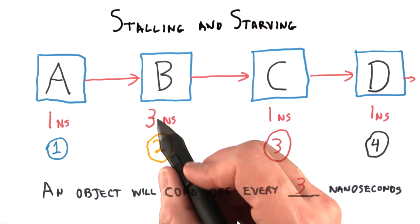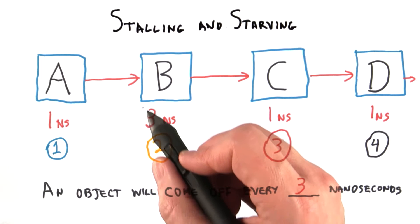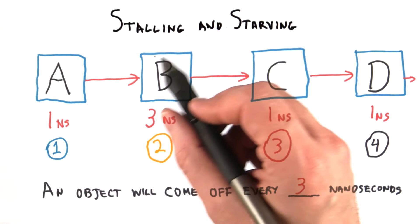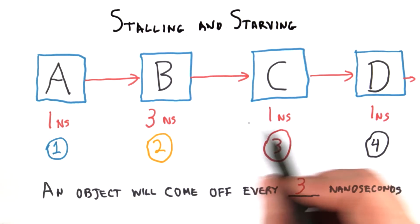Given this pipeline that was in the quiz, we found that B is the slow stage here, and B is in fact called the bottleneck. It's the slowest stage, and it's the one that determines how fast anything is going to come out of the pipeline.